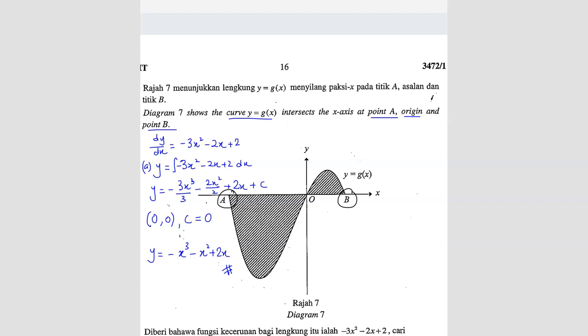So to find x-intercept, y equals 0. So that means negative x cube minus x square plus 2x equals 0. So we are going to take the whole equation, divide by negative so that we get positive here.